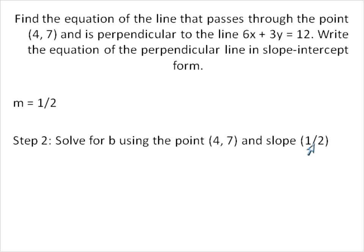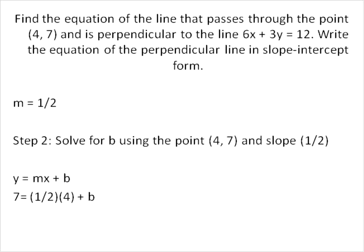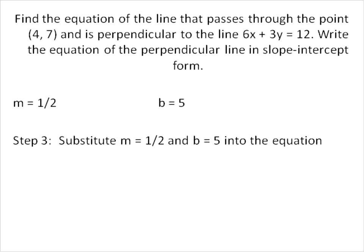We know that it passes through the point (4, 7) and has a slope of 1/2. So we solve for b by substituting x = 4, y = 7, and m = 1/2 into y = mx + b. 1/2 times 4 is 2. 7 minus 2 is 5. So our y-intercept is 5. We substitute slope 1/2 and y-intercept 5 into y = mx + b. m is 1/2, b is 5, and that is our final answer: y = (1/2)x + 5.